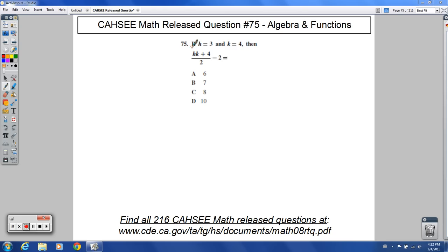Welcome to released question number 75 for CAHSEE Math. If h equals 3 and k equals 4, then hk plus 4, all divided by 2, minus 2, is going to equal what?